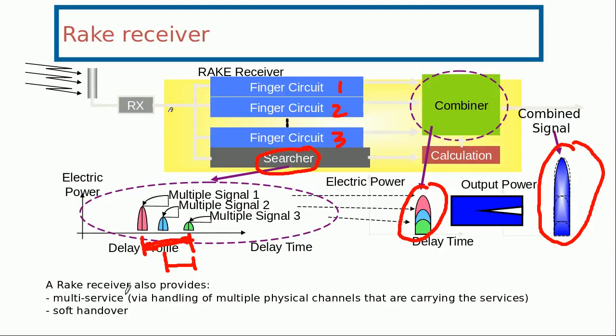For example, a mobile can use a voice channel and a data channel at the same time. Thanks to these finger circuits, and similarly when a mobile is doing soft handover in 3G, it is connected to two mobiles at a time during the procedure of the soft handover.